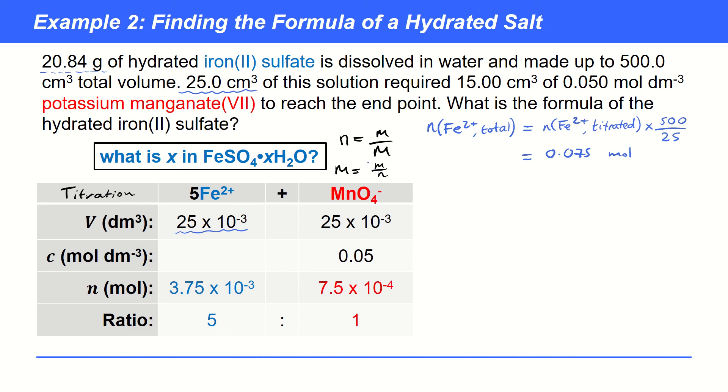So, now we can actually use that using this formula to work out the molar mass. Now, it's worth just noticing here that because we've got one iron in this formula here, then the number of moles of the whole lot is the same as just the number of moles of Fe2 plus. So, we can work out the molar mass of FeSO4 dot XH2O. It's just the mass of that divided by the number of moles. So, 20.84 grams divided by the number of moles, which is 0.075. And that gives us a molar mass of 277.87.